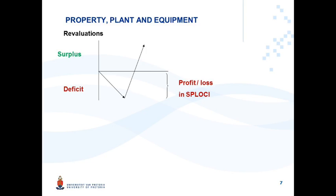Only once you've reversed the previous deficit in profit or loss do you move into a surplus situation, where you recognize a credit revaluation surplus through OCI. That portion recognized as a credit through OCI will then accumulate again in equity under the heading of revaluation surplus.